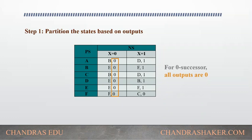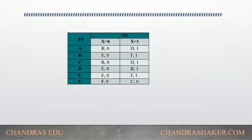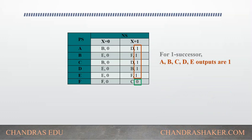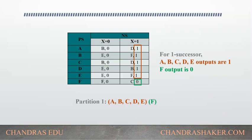Next we need to check x equal to 1. In this, the present states a, b, c, d, e have an output of 1 and the present state f has an output of 0. For the one successor, or x equal to 1, we have a, b, c, d, e with an output of 1. So we can make a partition: a, b, c, d, e as one group and f as another. Partition 1 is: {a, b, c, d, e} and {f}.